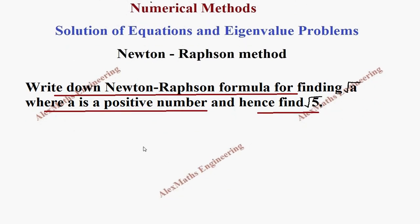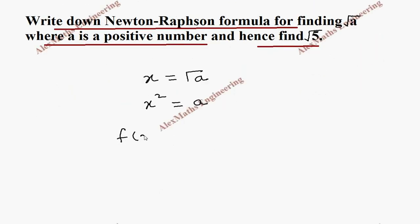So let's take x which is square root of a. When we square on both sides we get x square equal to a. Using this we have to write f of x. f of x is, we are taking all the terms to one side, so x square minus a. Now its derivative f dash of x is 2x.